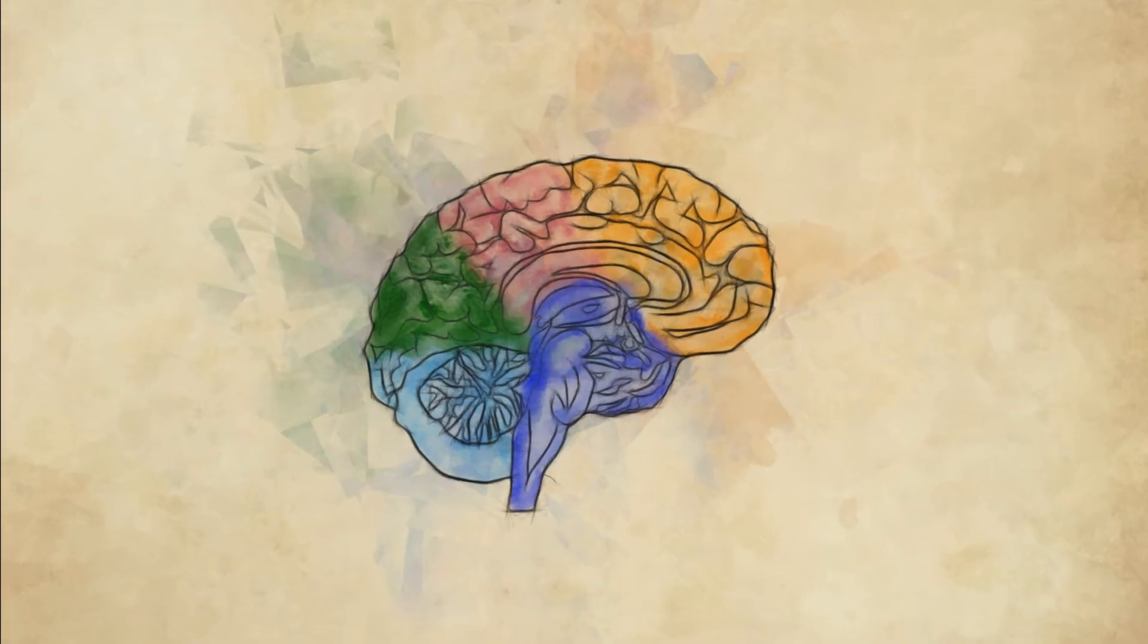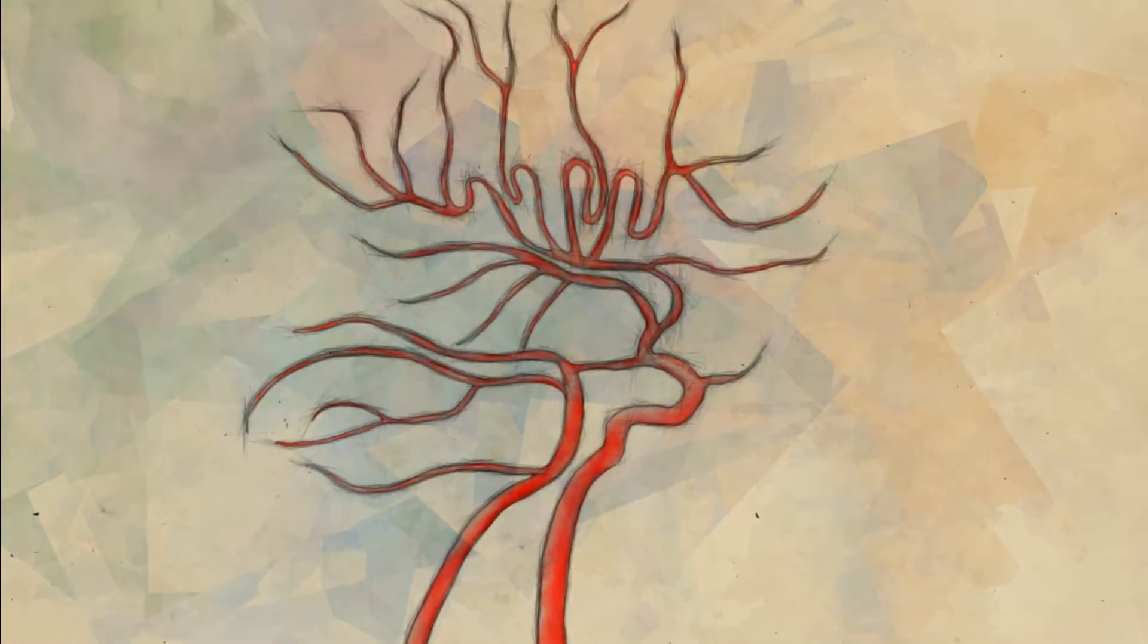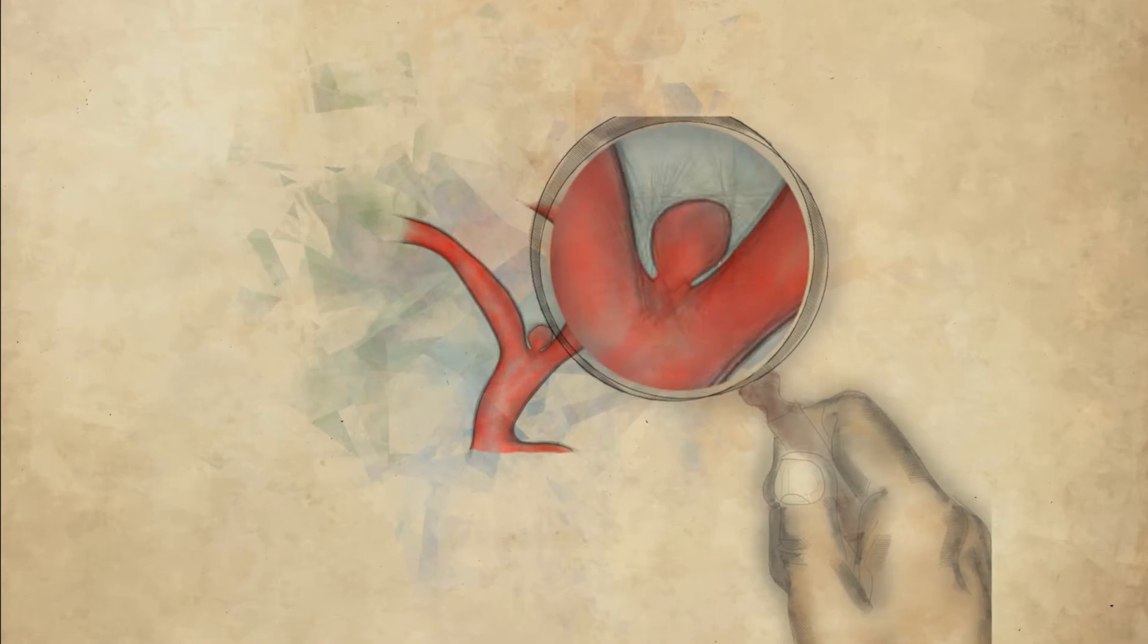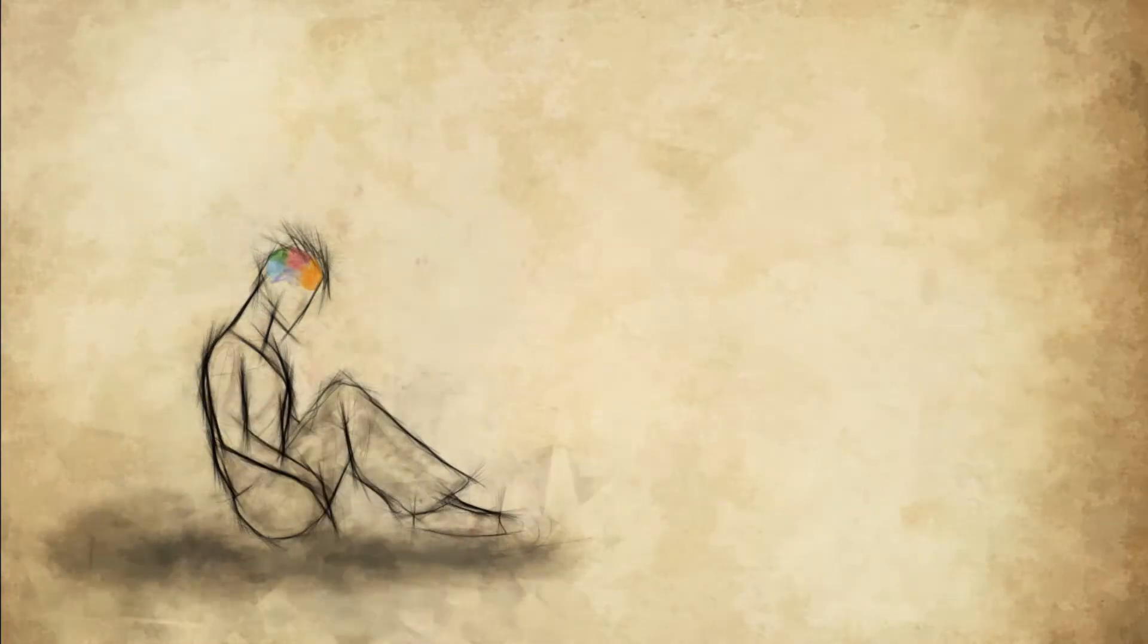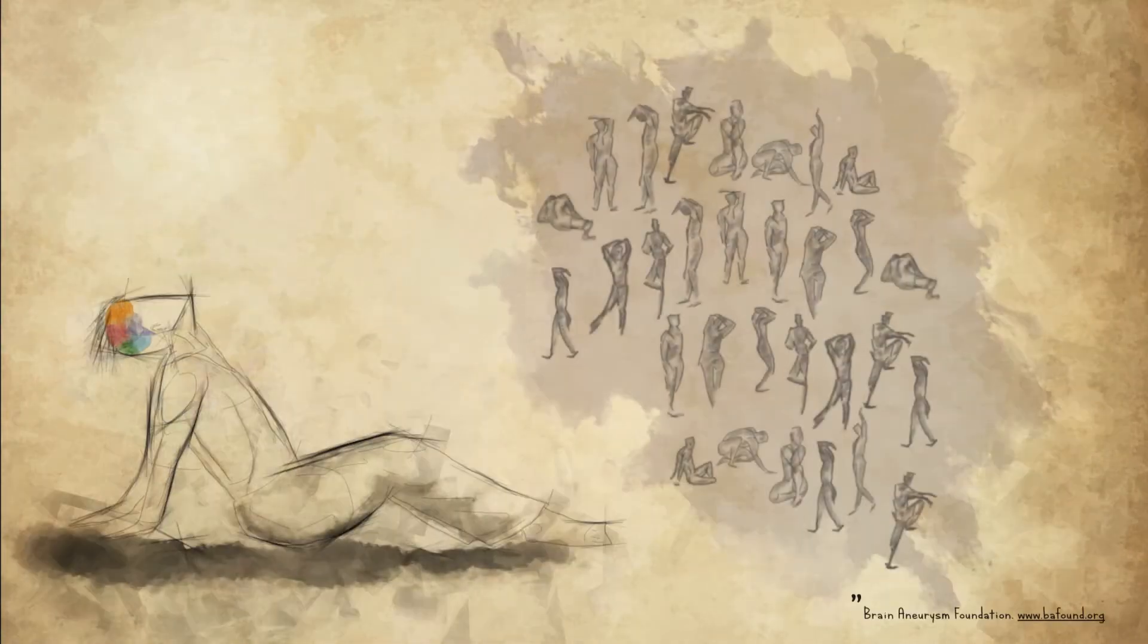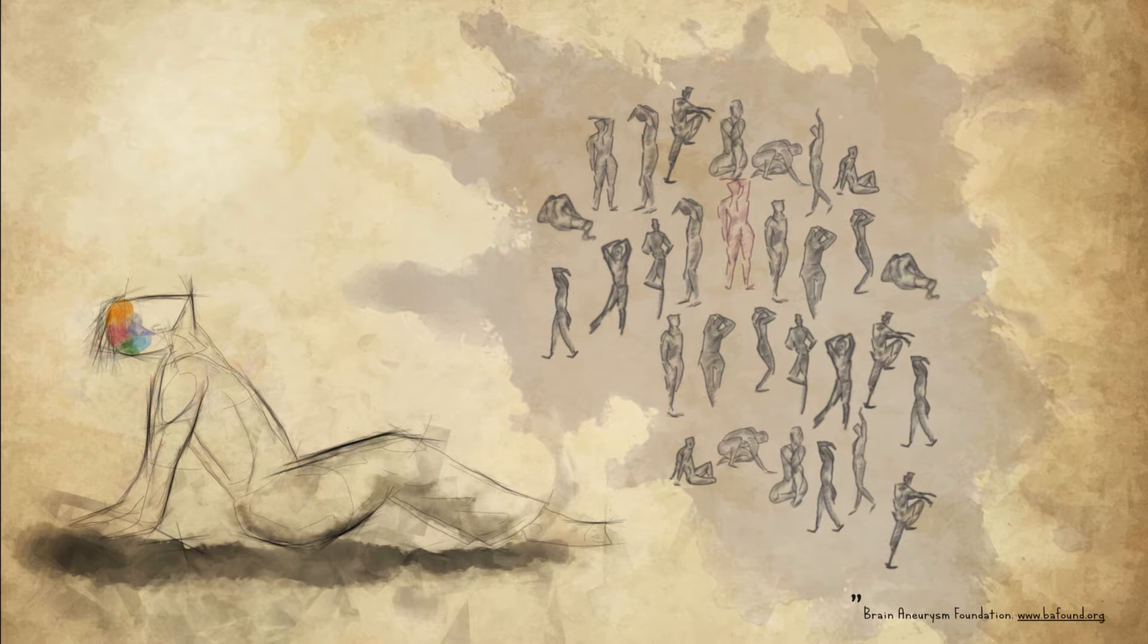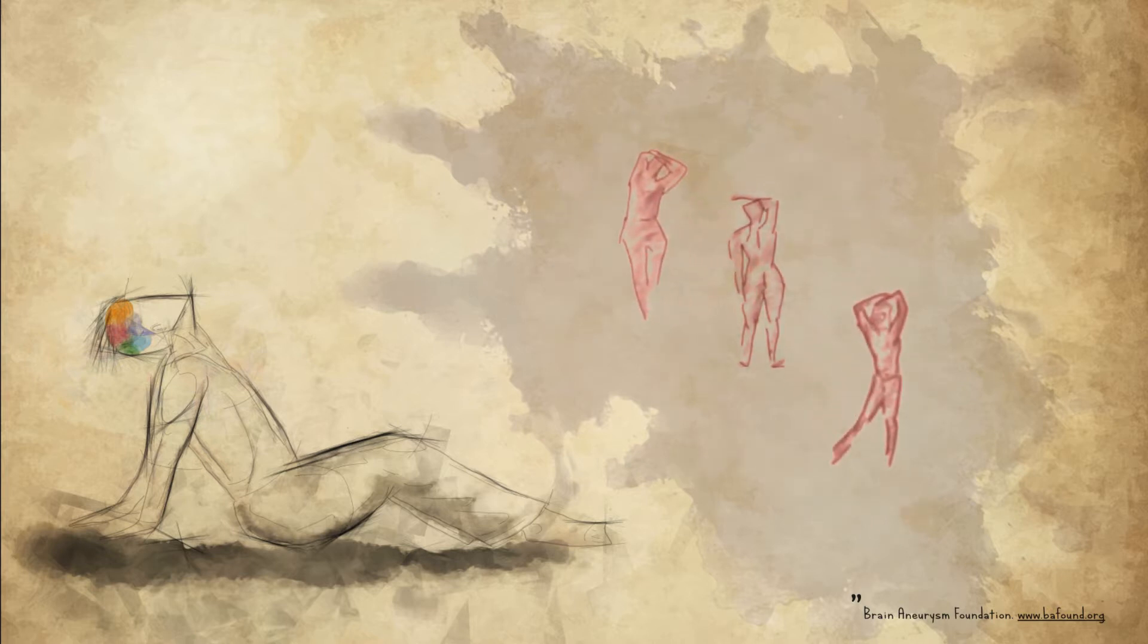A brain aneurysm is an abnormal expansion of a blood vessel in the brain caused by a weakening of the vessel wall. About one in 30 adults have a brain aneurysm. About one-third of aneurysms found in people of working age will eventually rupture during their lifetime, of which 40% are fatal.